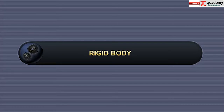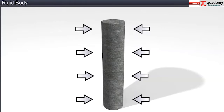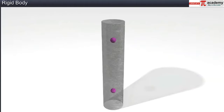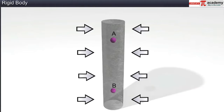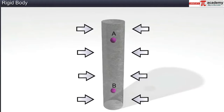In this module, you will learn about a rigid body. A rigid body is a system of particles with a finite size that do not get deformed under the influence of any external force. The distance between any two particles of an ideal rigid body does not change even when it is under the influence of external forces.